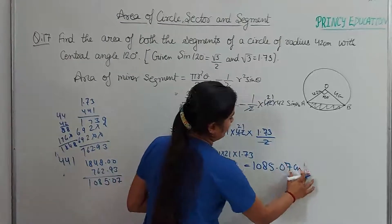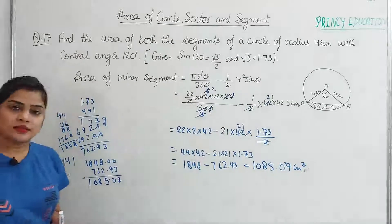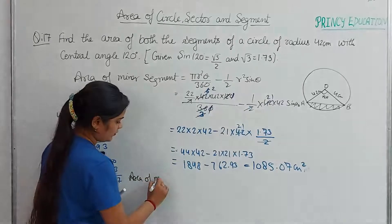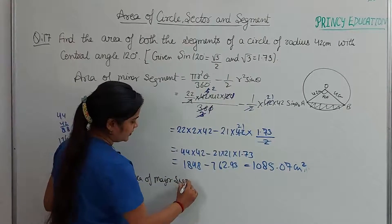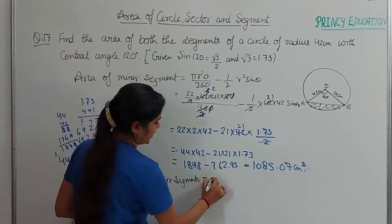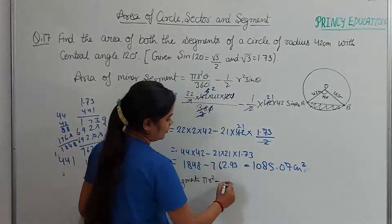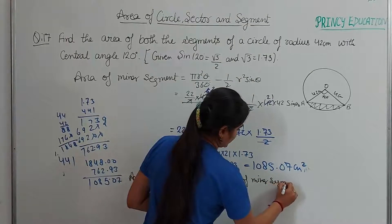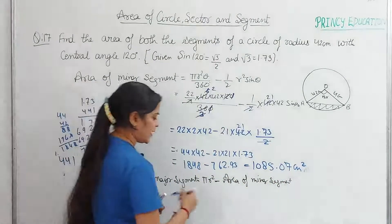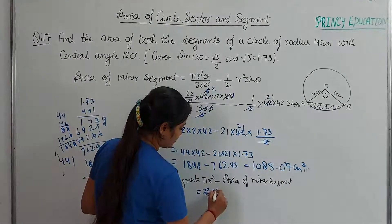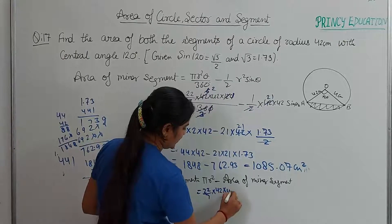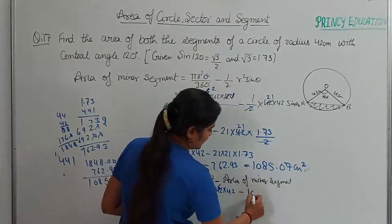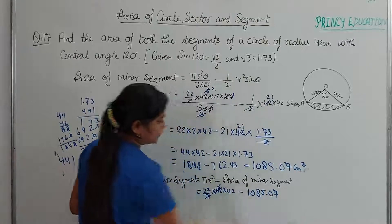This is the area of the minor segment: 1085.07 cm². Now for the area of the major segment, the formula is: area of full circle (pi r²) minus area of minor segment. Pi value is 22/7, r = 42, so pi × 42 × 42 minus 1085.07.